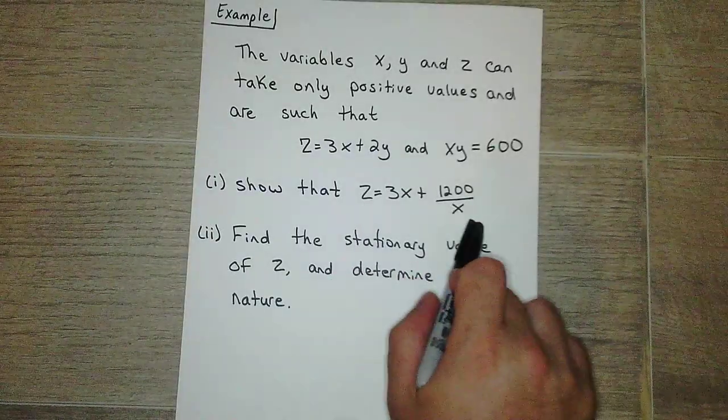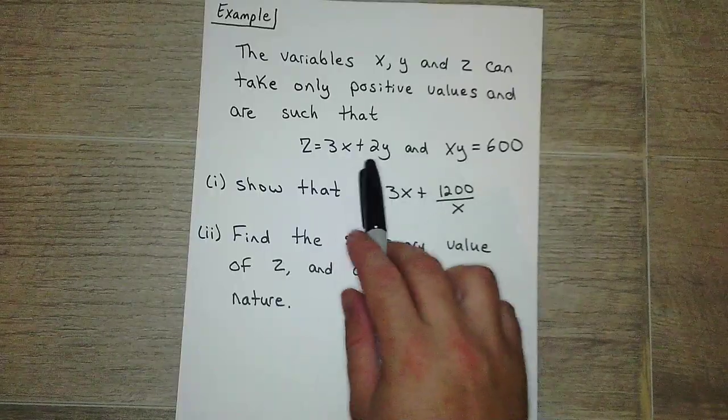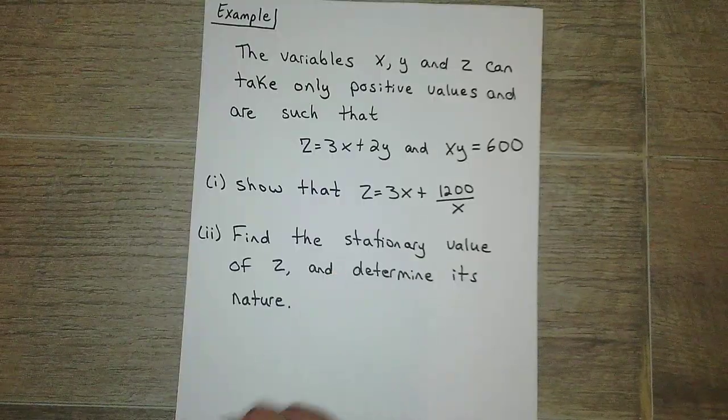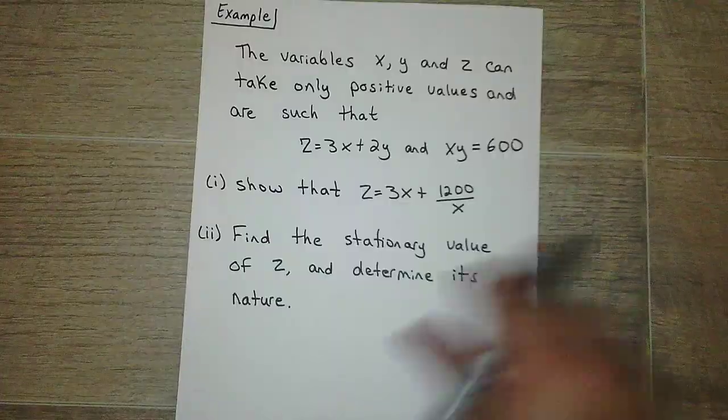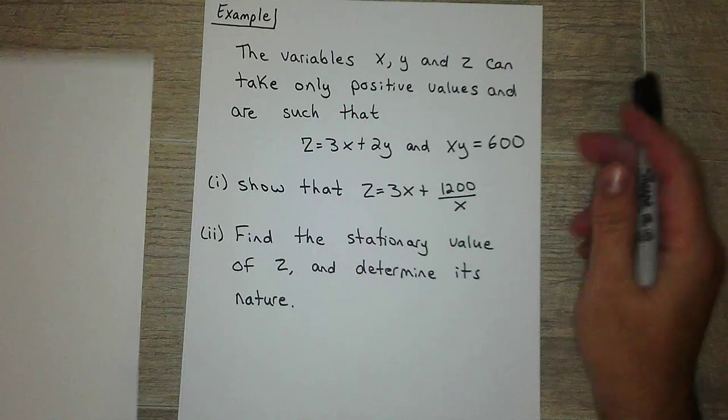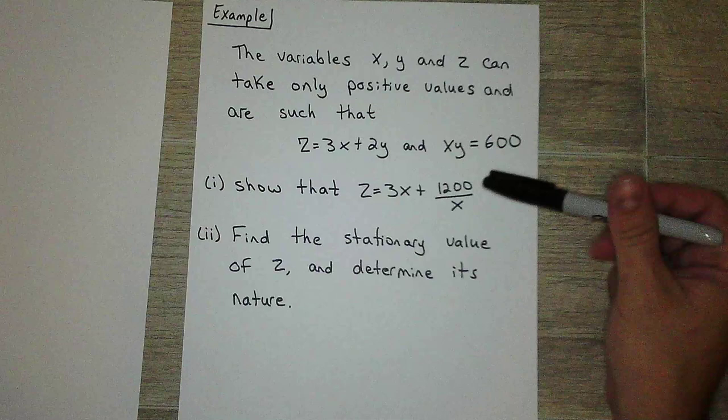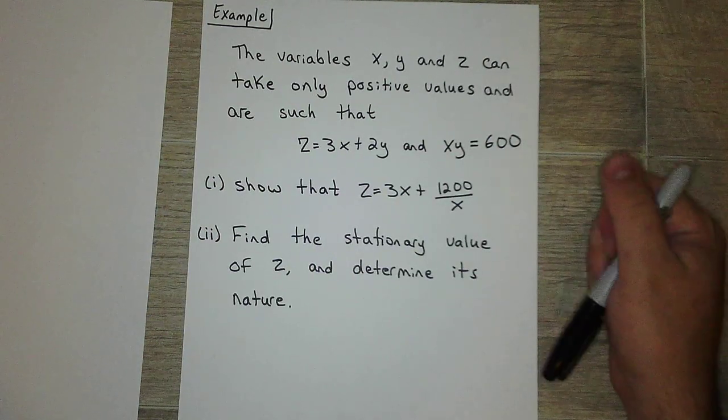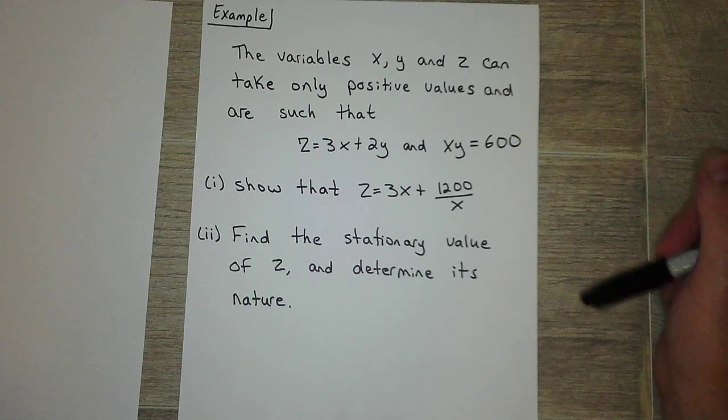Part (i) show that z can be written as this equation. So I'm obviously going to do some kind of combination between these two. And then chapter 12 stuff. So find stationary value of z and determine its nature. Okay, so let's get started with part (i). If you're taking notes, go ahead and pause it. Copy this down and I want you to go ahead and try (i) and (ii) on your own.